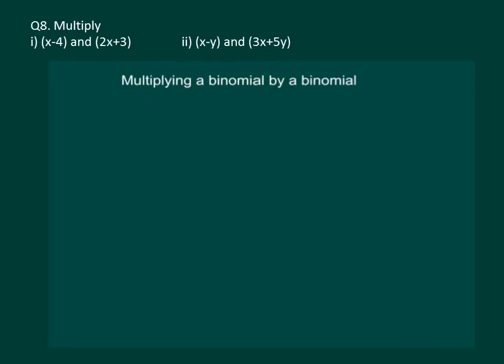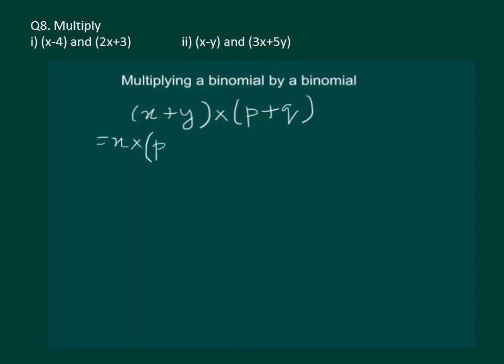To understand the method of multiplying a binomial by a binomial, let us take up two simple binomials, say x plus y, multiplied by p plus q. We start by distributing the first bracket and get x multiplied by (p plus q), plus y multiplied by (p plus q).